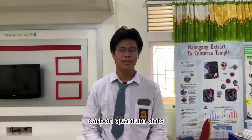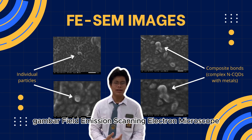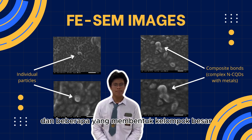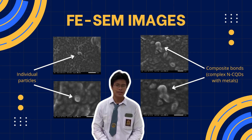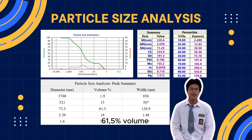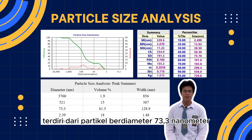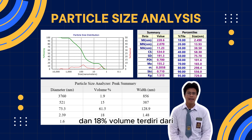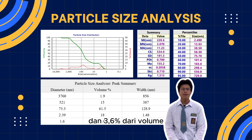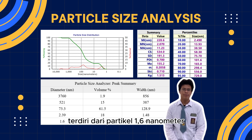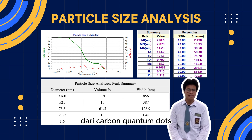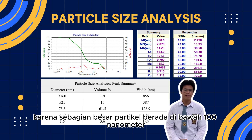The field emission scanning electron microscope images show aggregated nitrogen carbon quantum dots, with some individual particles and some forming large clusters, which can potentially create composite bonds. The particle size distribution shows 61.5% of the volume consists of 73.3 nm diameter particles, 18% consists of 2.39 nm particles, and 3.6% consists of 1.6 nm particles. These results confirm the successful synthesis of carbon quantum dots, as most of the particles are under 100 nm.